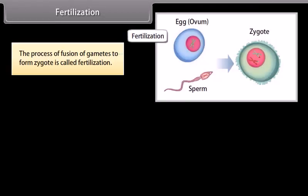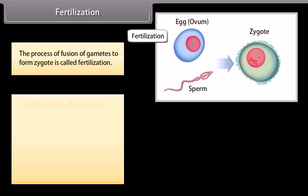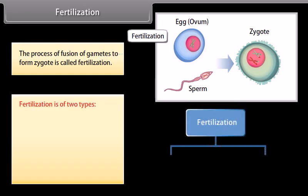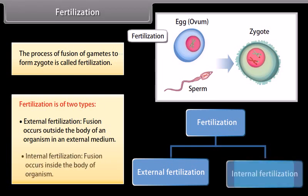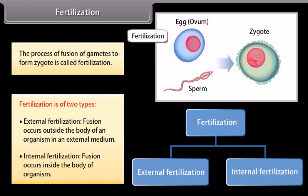The process of fusion of gametes to form a zygote is called fertilization. Fertilization is of two types: external fertilization, where fusion occurs outside the body of an organism in an external medium, and internal fertilization, where fusion occurs inside the body of the organism.